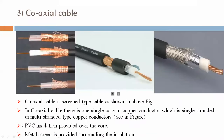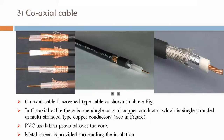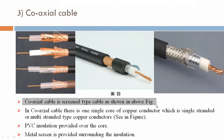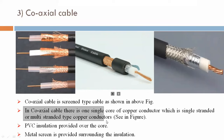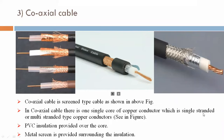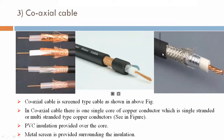Now we are discussing co-axial cable — see figure. Co-axial cable is a screen type cable as shown in the above figure. In co-axial cable, there is one signal core of copper conductor which is either single-stranded or multi-stranded type. Here, this is single strand and this is multi-strand.